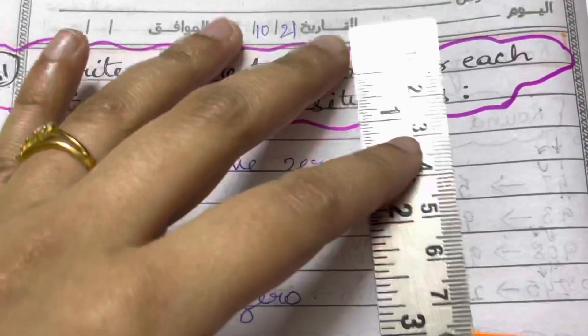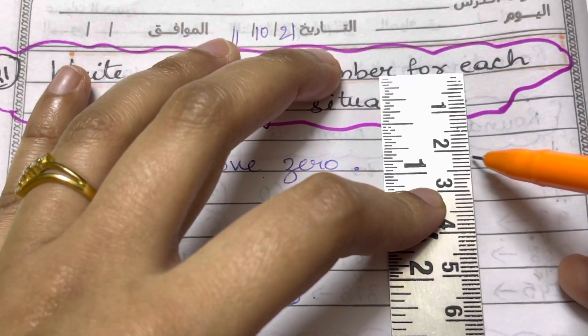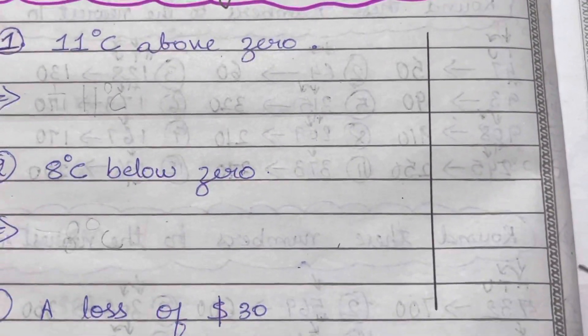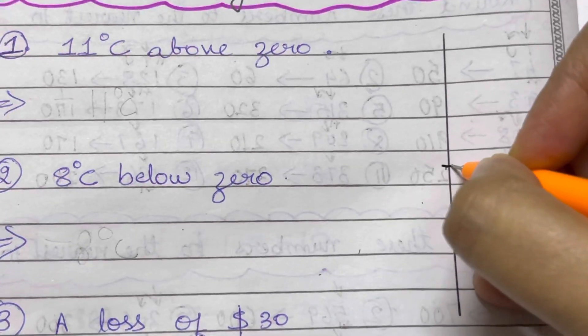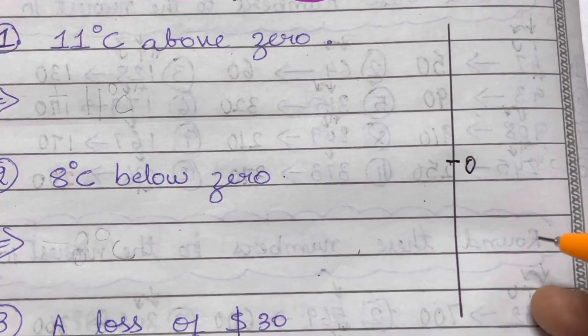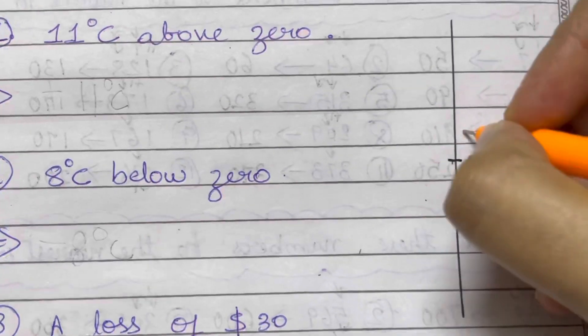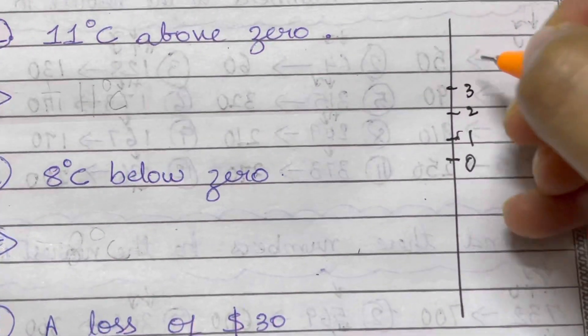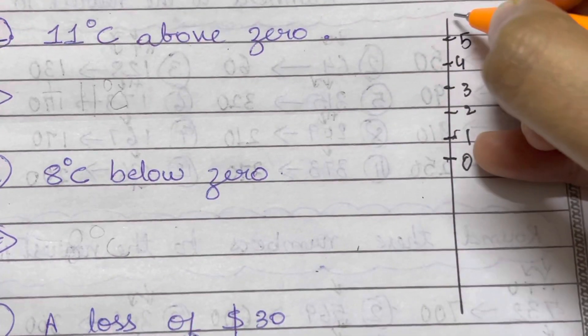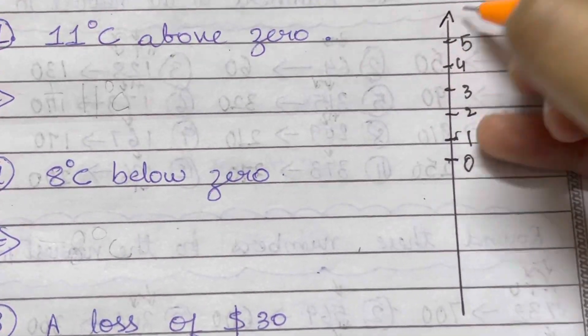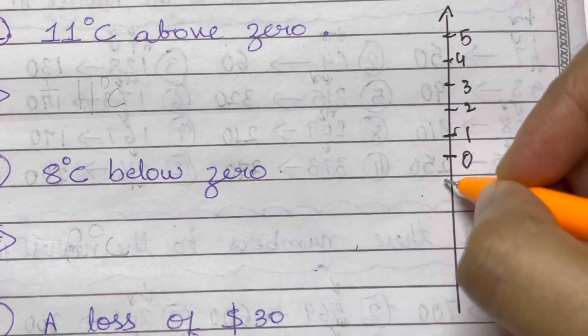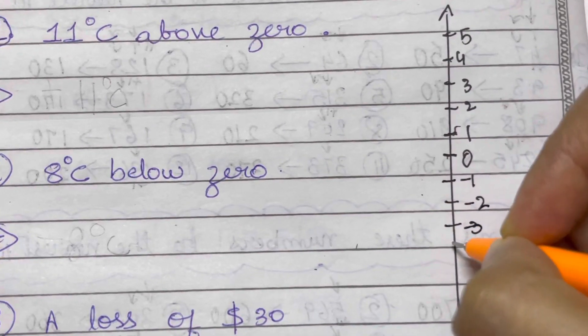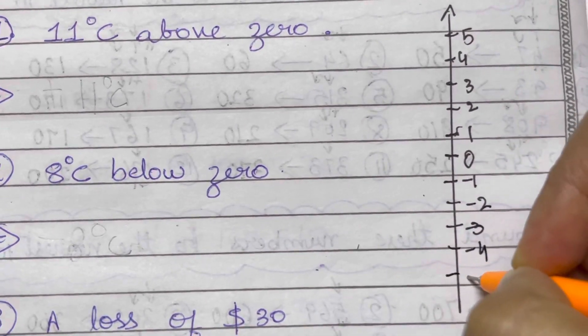Let me draw a scale of positive and negative integers where we can refer. We have zero, and then all the positive numbers above - like one, two, three, four, five, and so on, it continues. And all the negative numbers below zero - so minus one, minus two, minus three, minus four, and minus five.